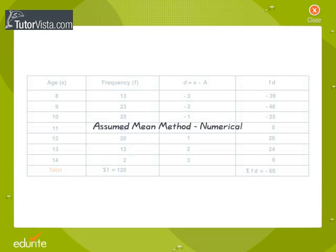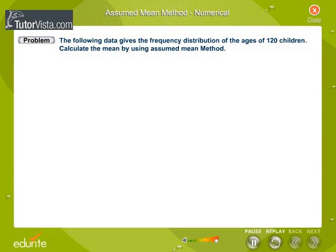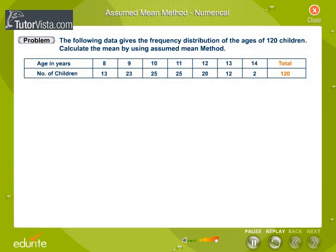Assumed Mean Method Numerical. The following data gives the frequency distribution of the age of 120 children. Calculate the mean by using the assumed mean method.